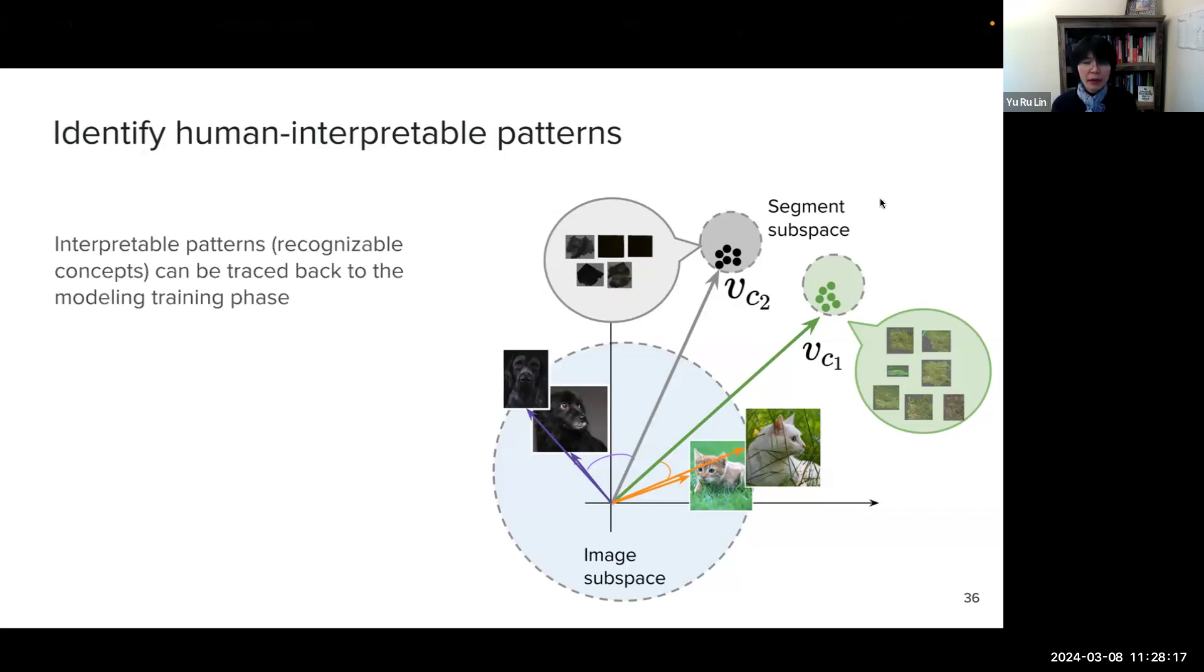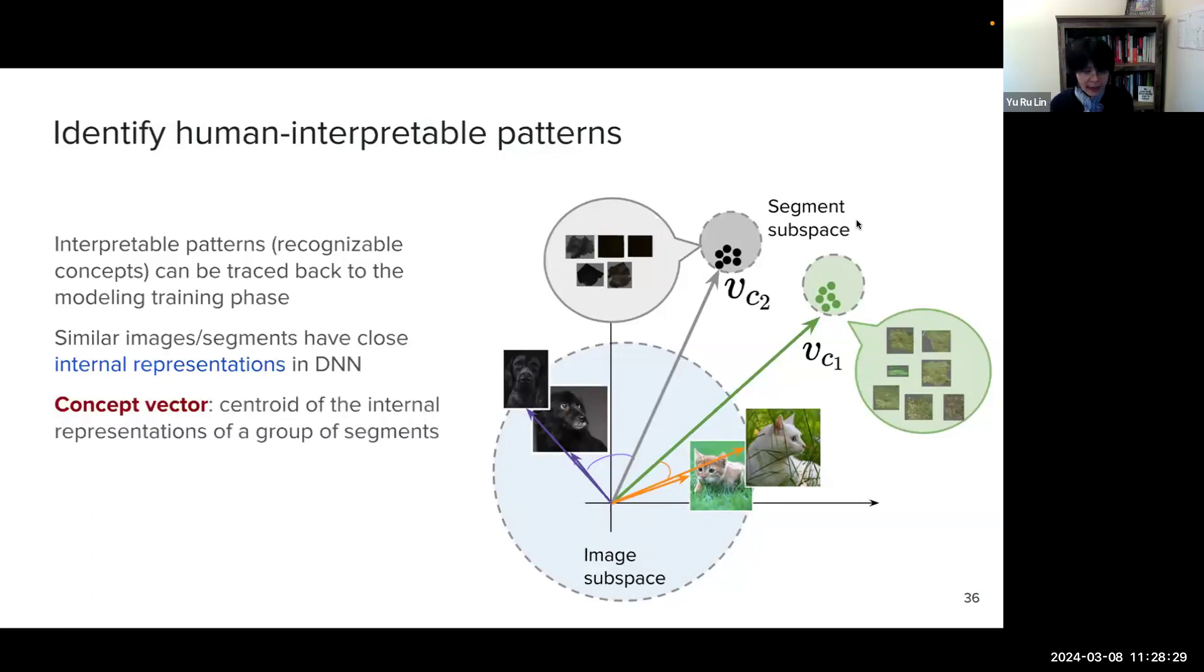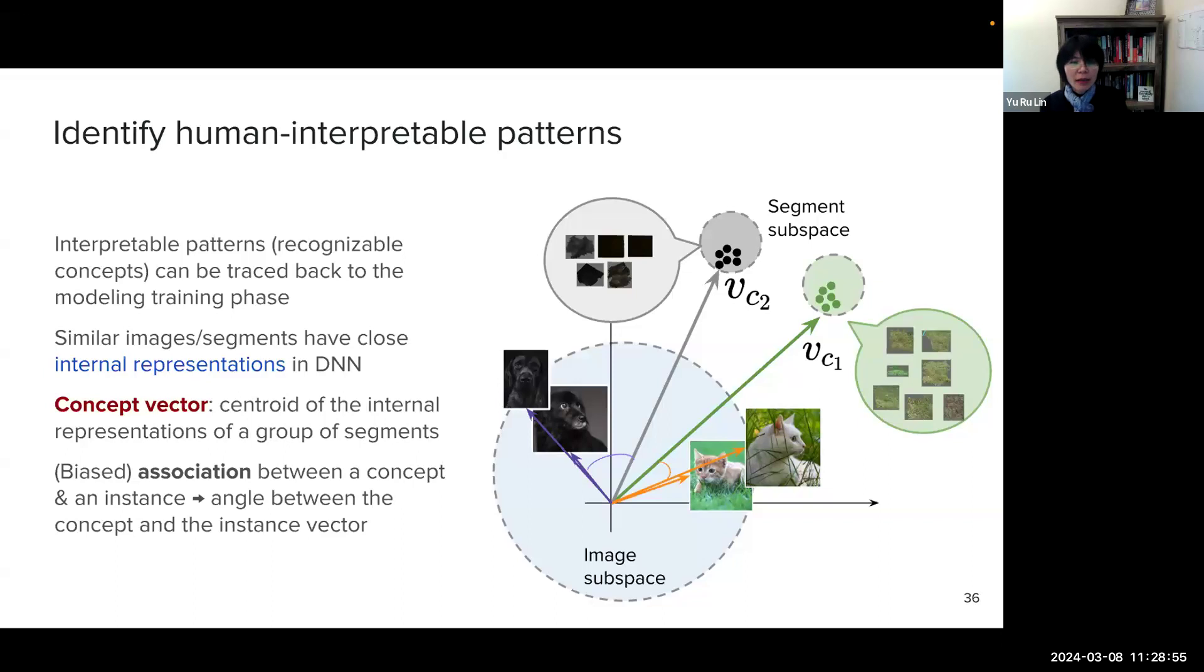And we design the system so that it can identify human interpretable patterns. So the idea is that these interpretable patterns or the recognizable concepts, they can be traced back to model training phase. So for example, similar images or segments may have closed internal representations in deeper neural networks. And so we identify so-called concept vectors. These are centroids for the internal representation of the group of images or segments. And then we can measure the bias through the association between the concept and an instance. And these are calculated as the angle between the concept and the instance vector. And this will tell us whether a particular concept might appear in an image.